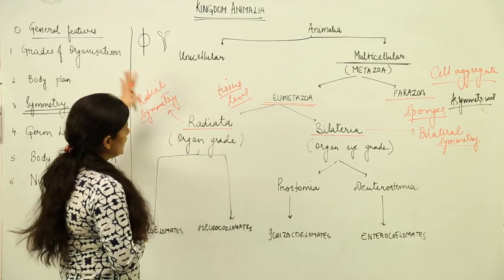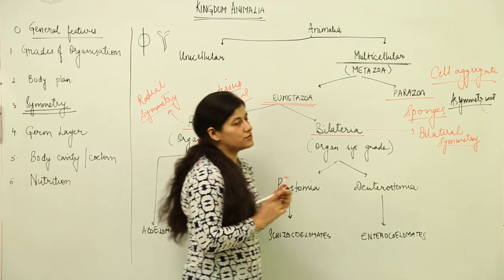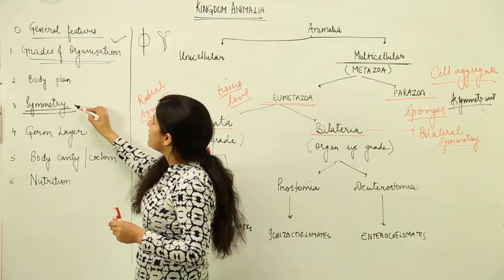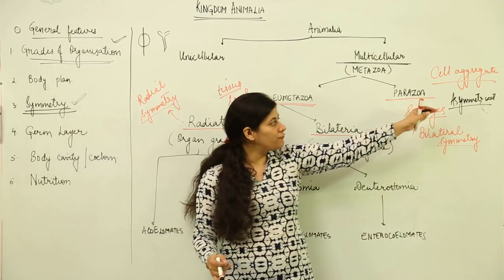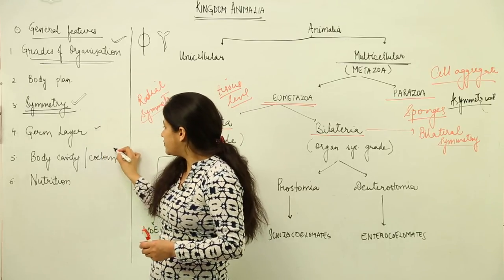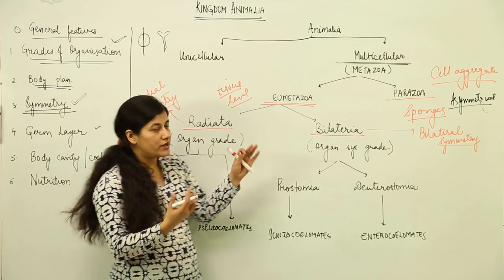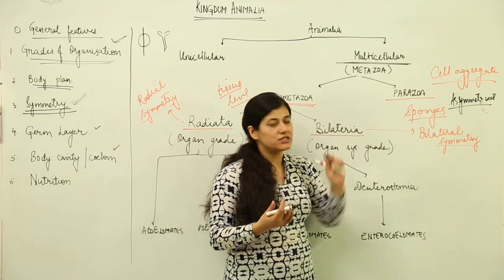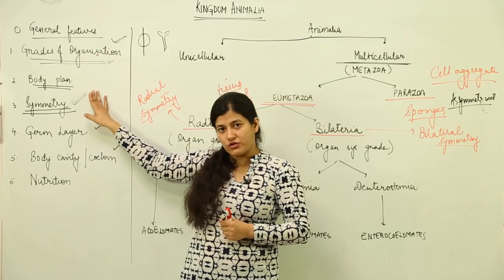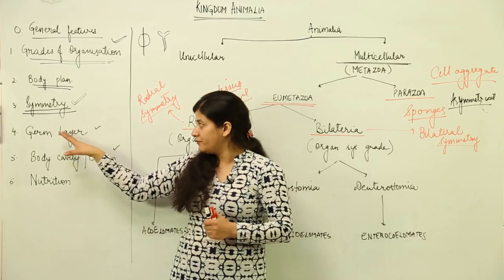We were talking about grades of organization and reached the organ grade and organ system grade — the highest level. So we are done with grades of organization and done with the three types of symmetries: asymmetrical in Parazoa, then radial and bilateral symmetry. Next we are going to talk about germ layers and body cavity. Body plan has also been discussed — whether the organism has a radial arrangement or a cell aggregate plan or tissue level. Next we have to understand germ layers and body cavity, and nutrition we will cover as well.